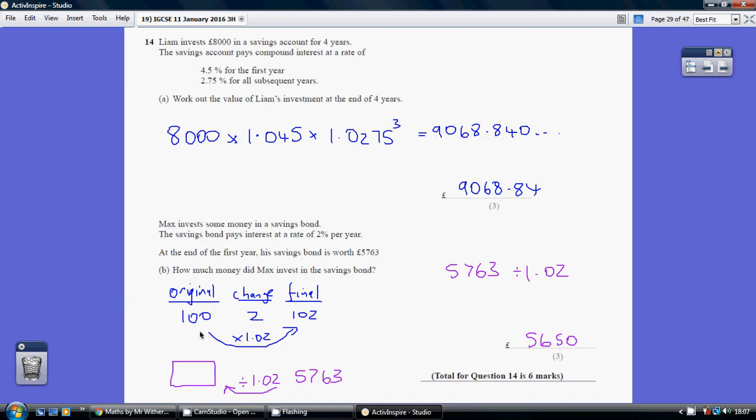Now for part B, I think this is one of these where it's best just to start off with your initial three columns: an original price, the price change, and the final price.